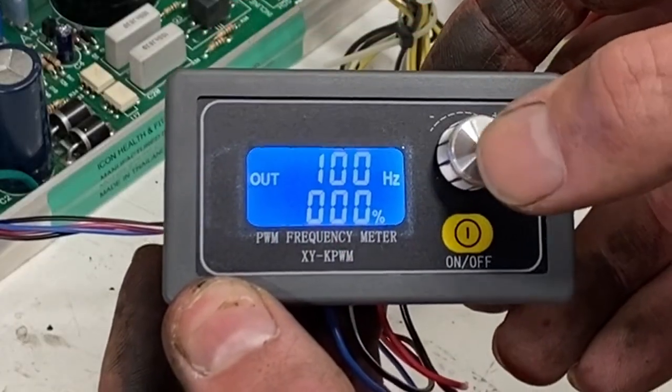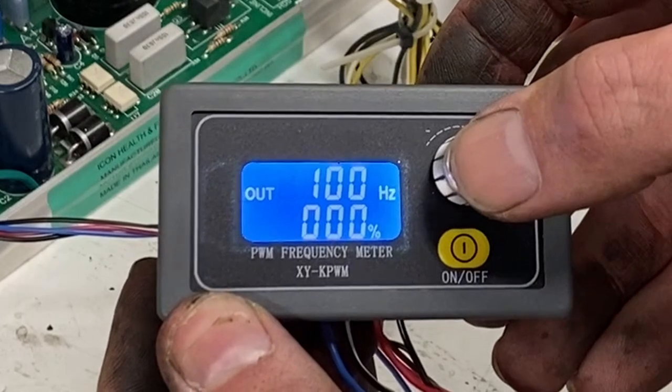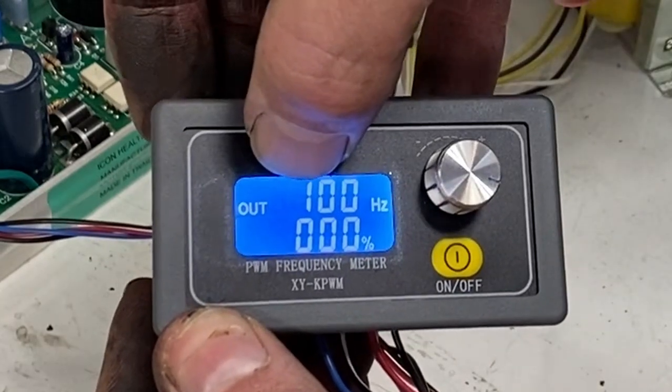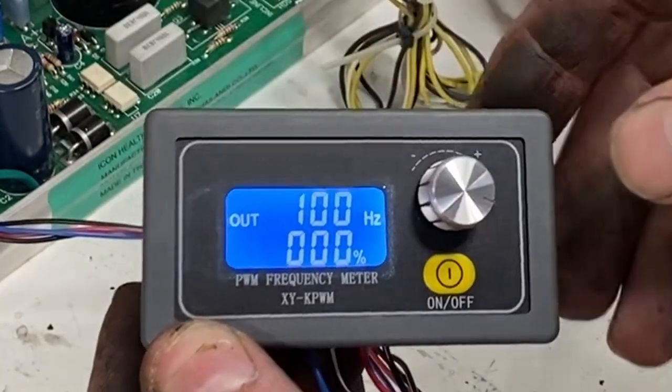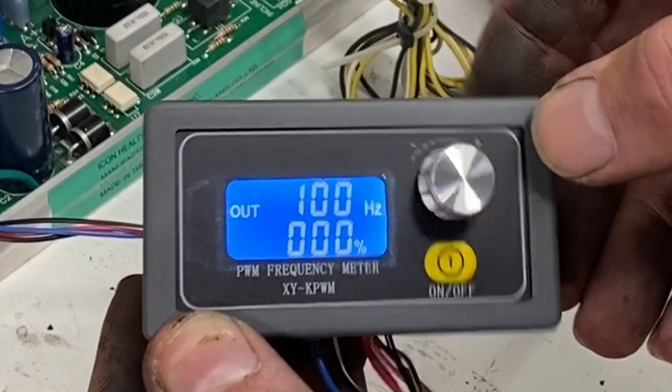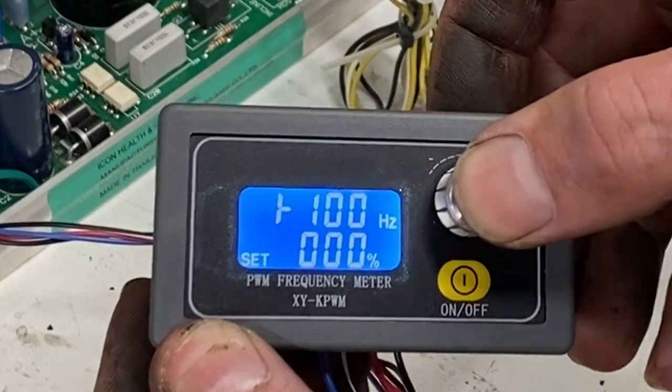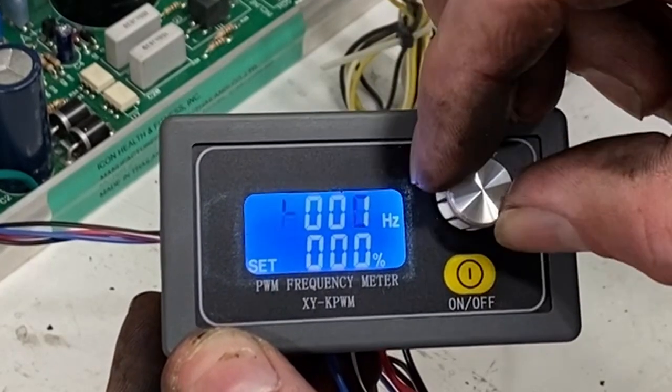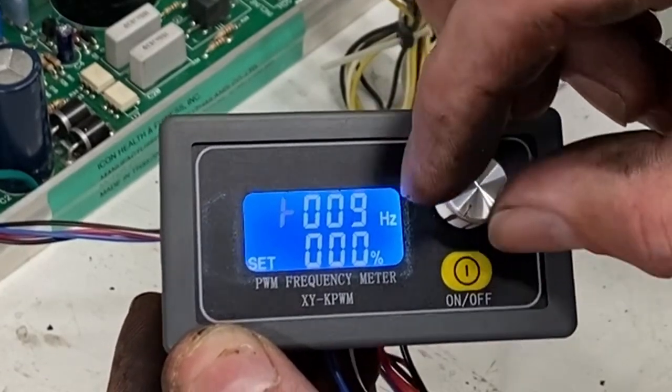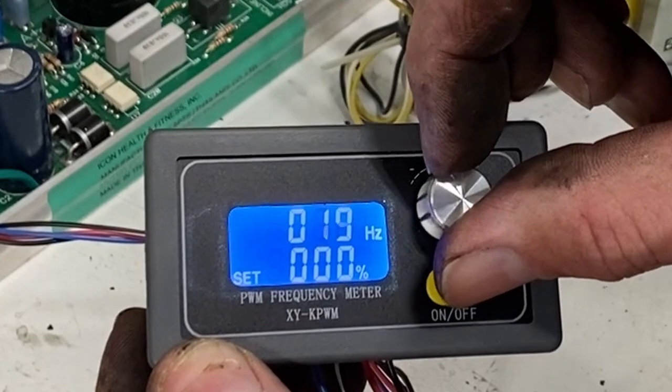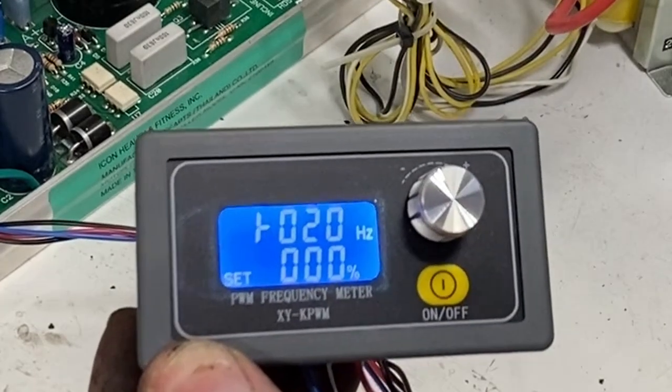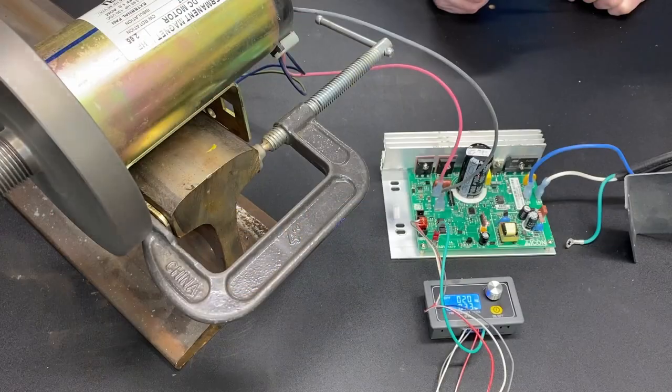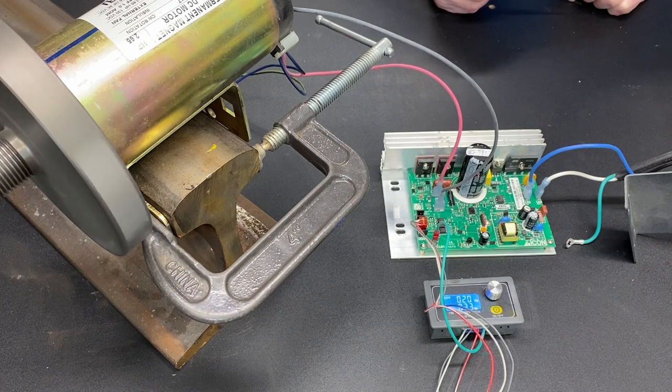To set the hertz on this unit, you simply push the knob twice. And then you'll see a little mark right here next to the hertz so that you can adjust it. At that point, you turn the knob. 20. 20 is where you want it set at. If you have it set on a different hertz, it will not function properly.